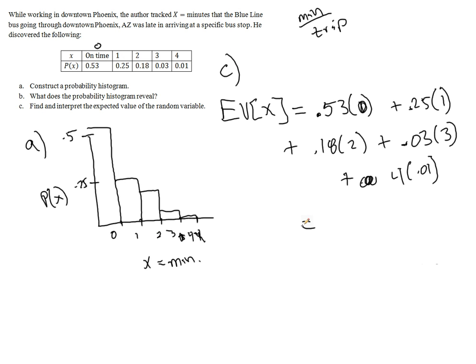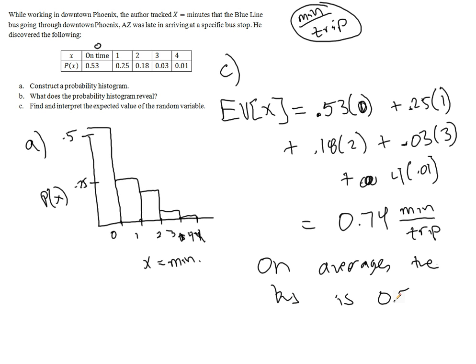So the expected value is 0.74, and our units are minutes per trip, because this is an average. We took 100 trips, so to speak, and the total number of minutes that it was late got divided by the 100 trips, and so on average the bus is 0.74 minutes late.